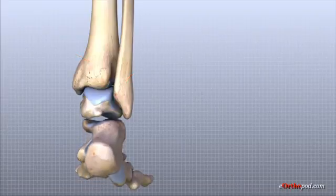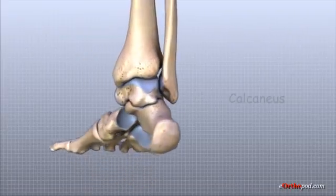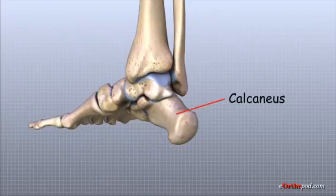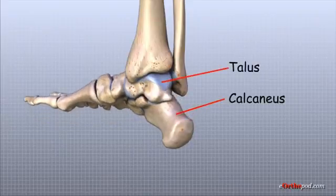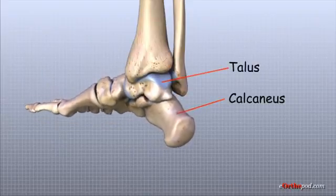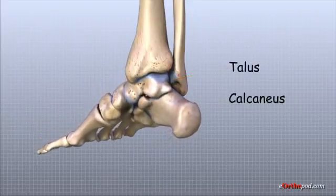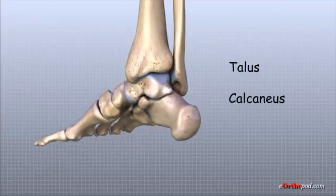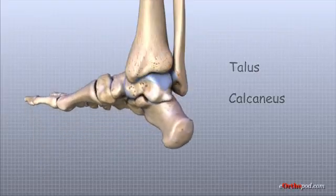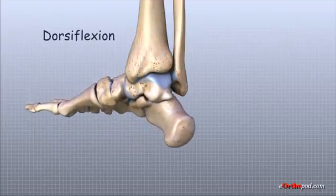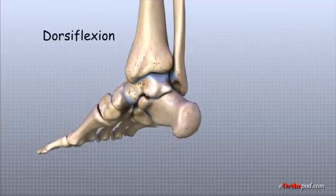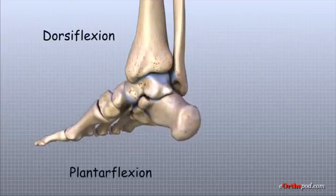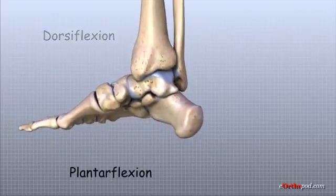The bottom of the talus sits on the calcaneus, the bone that makes up the heel. The talus works like a hinge inside the ankle socket to allow your foot to move up, called dorsiflexion, and down, called plantarflexion.